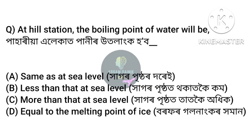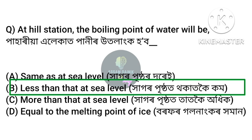At a hill station, the boiling point of water will be — Anchar Option B: Less than that at sea level. The boiling point of water at a hill station is lower than that at sea level.